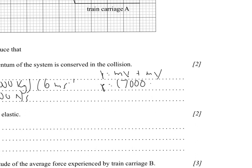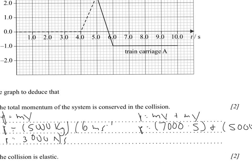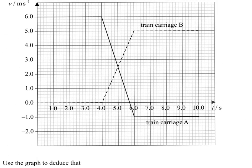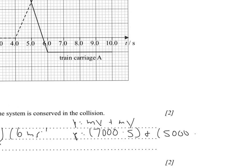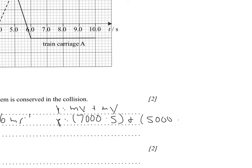So, again, that's 7,000 times 5, plus the final for carriage A. Again, it has a mass of 5,000 times the final velocity of carriage A, which is given right here as negative 1 meters per second. So, 500 times negative 1.